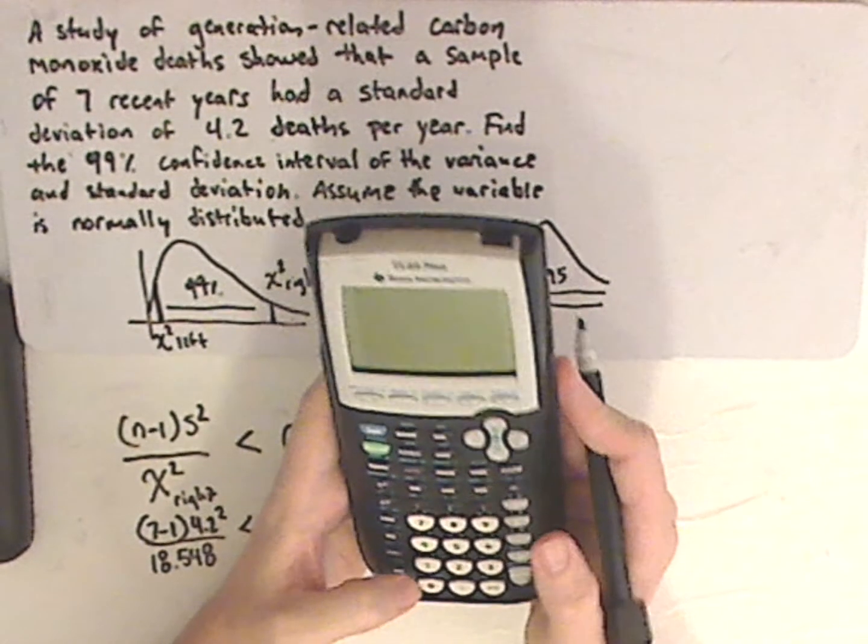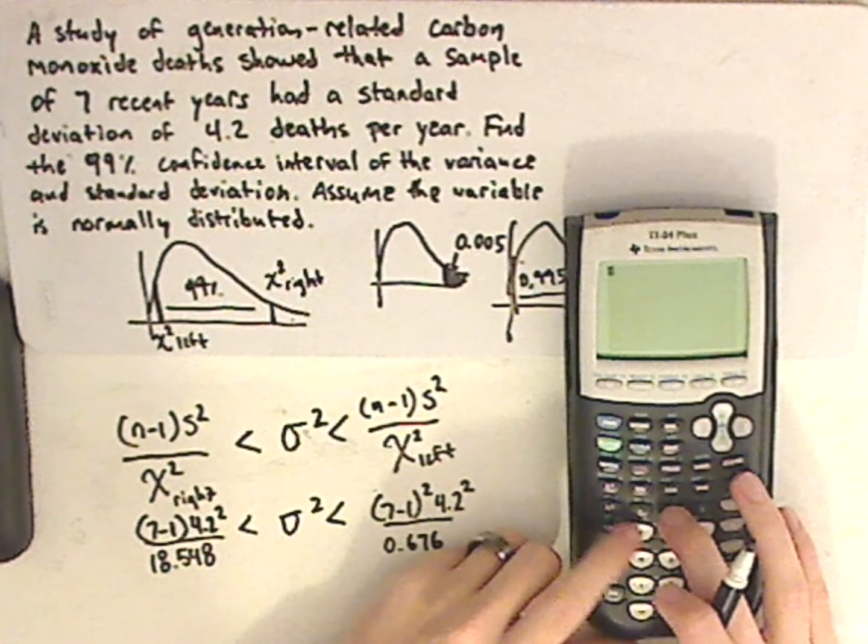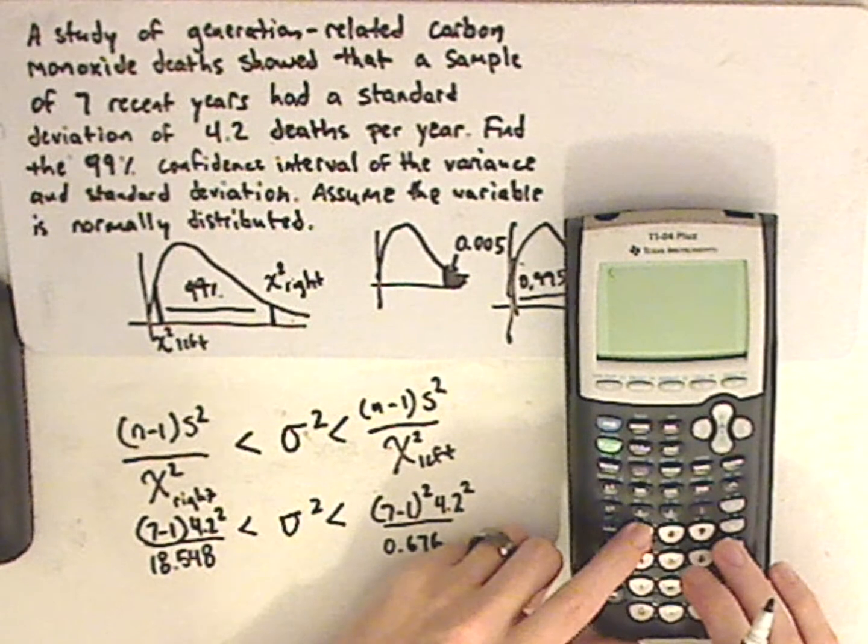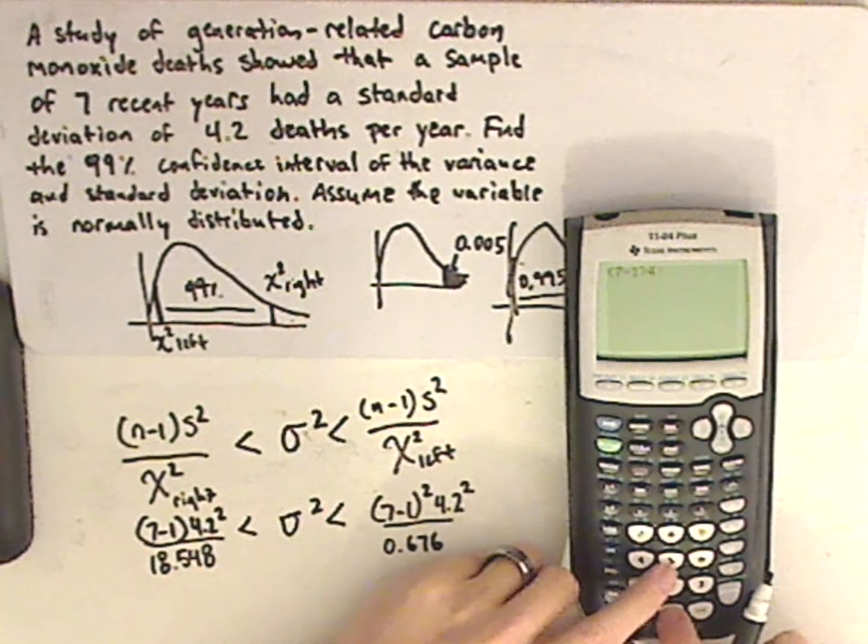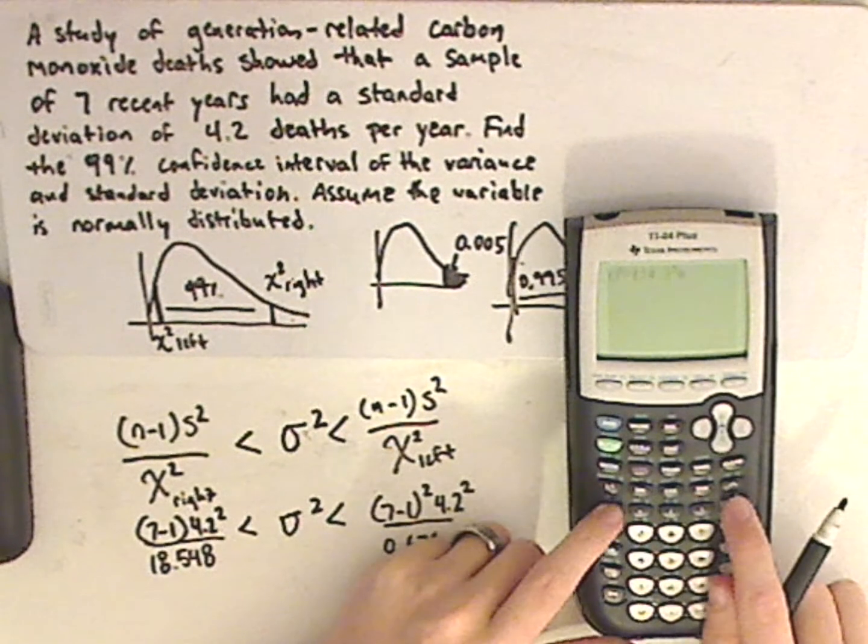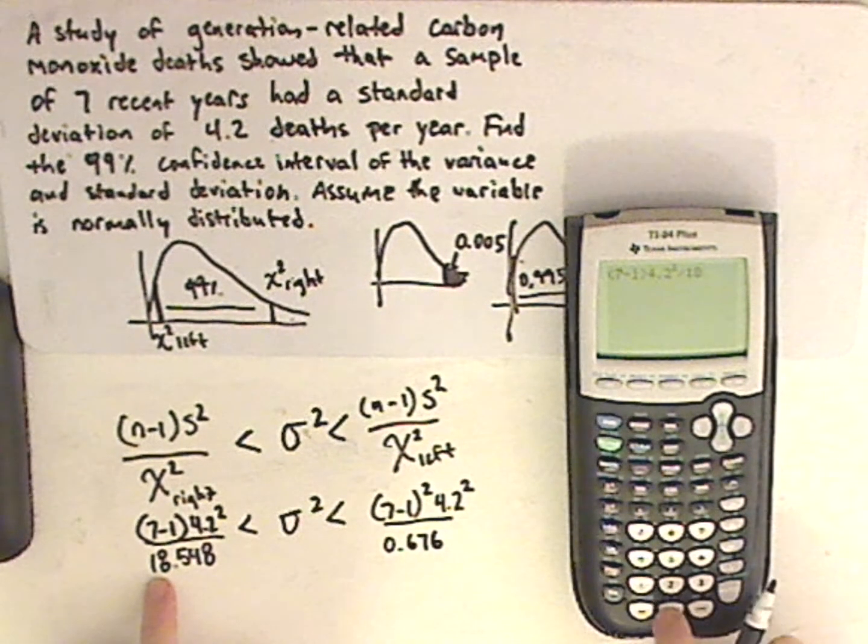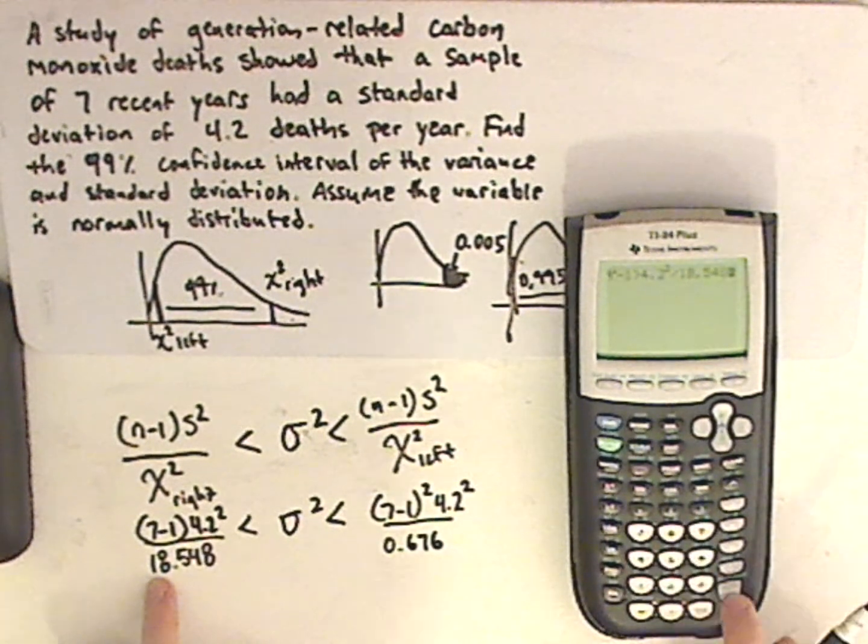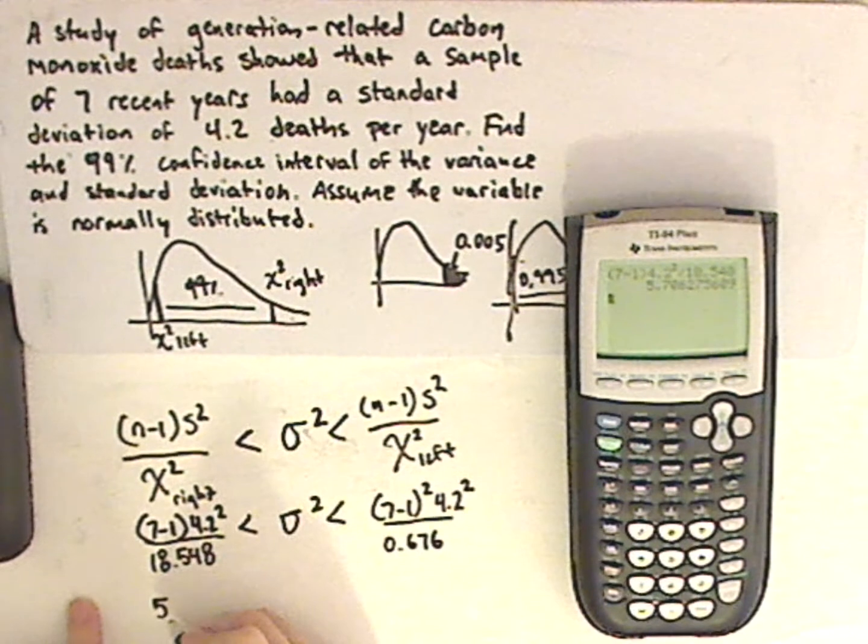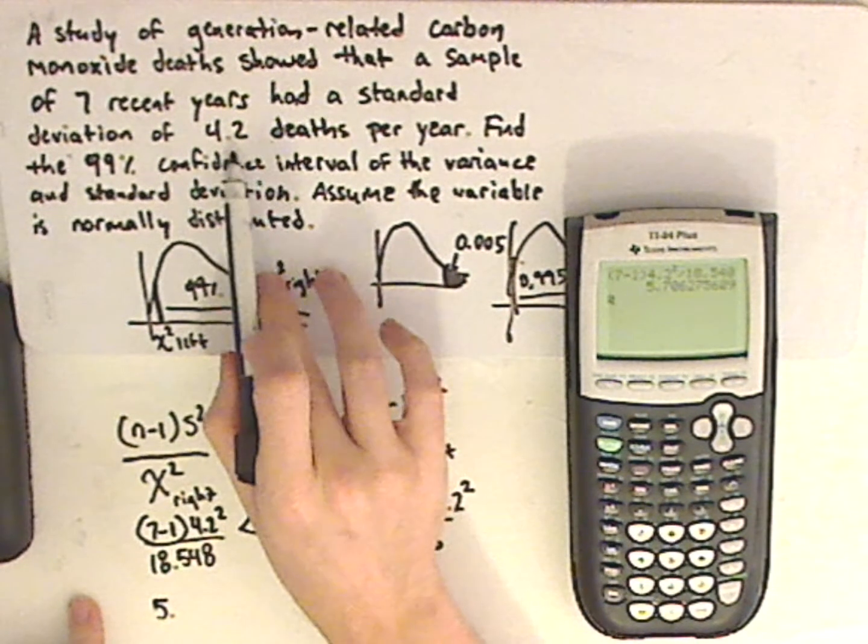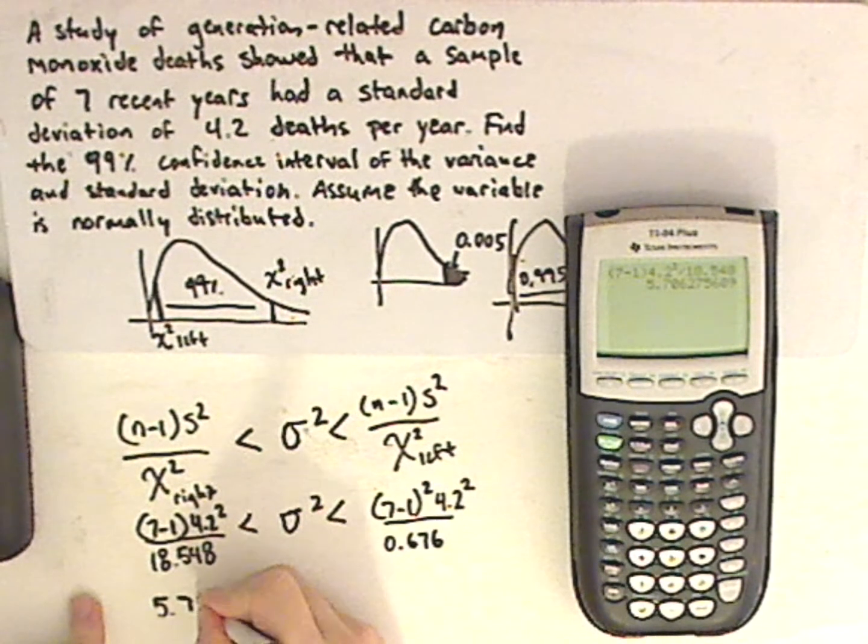So plug it into your calculator. Turn it on, always nice. Always good to turn it on first before you start doing your calculation. So, 7 minus 1, parentheses, and then 4.2 squared. And then first it's divided by 18.548. So, I'm going to do one more decimal place than what they give me here. So, it's 5.71.